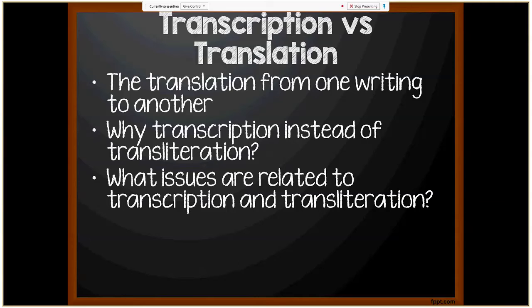What issues are related to transcription and transliteration? There is a lack of consistent rules for some languages or varying sets of rules. There is country variation in the choice of rules and regional variations in pronunciation. The same name may be transcribed differently even within the same family. It's also more confusing when common or religious names cross over several countries with different scripts — the most popular example being the name Muhammad, which we'll discuss later.